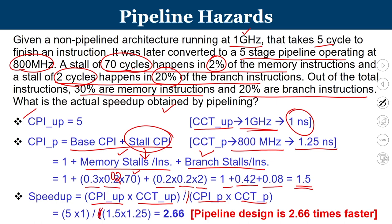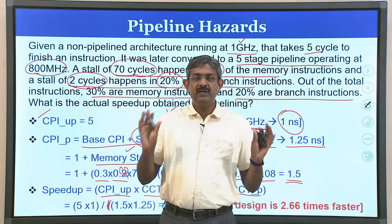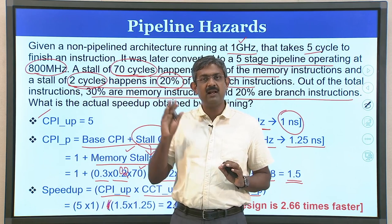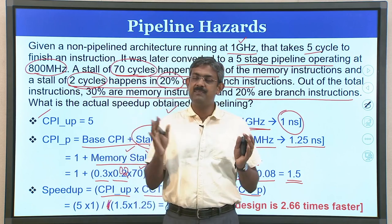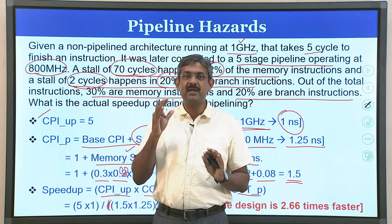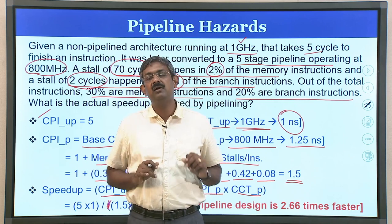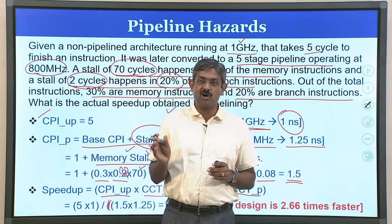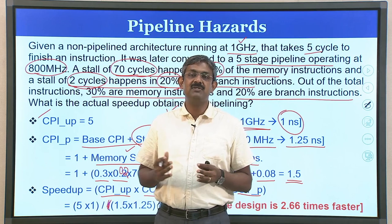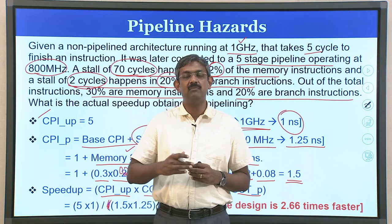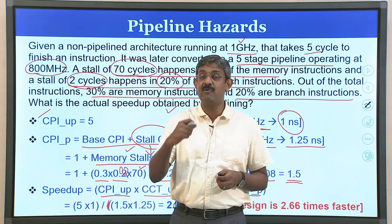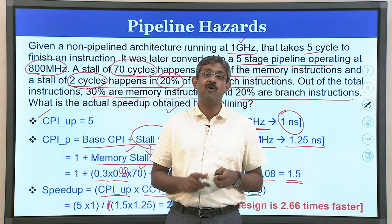The concept was simple: for the unpipelined design, CPI equals the number of clock cycles to complete an instruction, which is 5, and there is no stalling. For the pipeline design, the base CPI plus stall CPI was computed — stalls came from two categories: memory stalls and branch stalls. We computed proportionate fractions, obtained the CPI value, noted that clock cycle times differ, and took the ratio of execution times to get speedup.